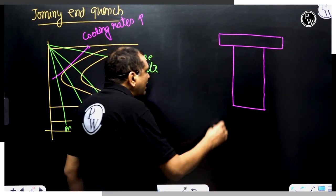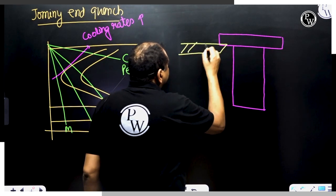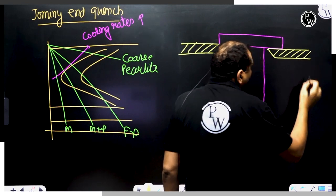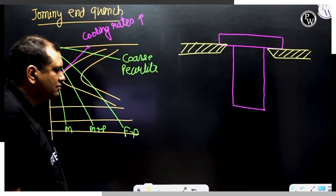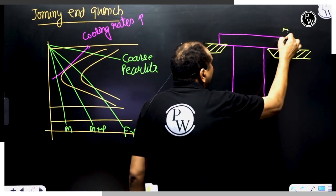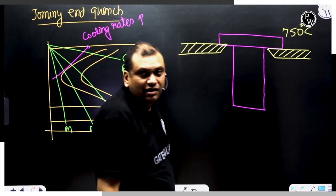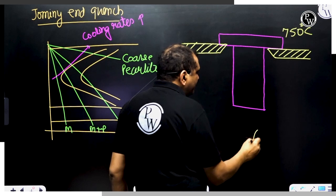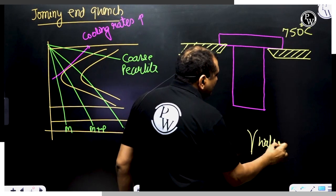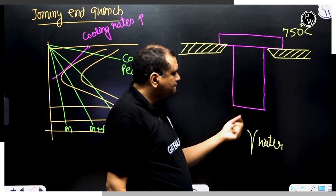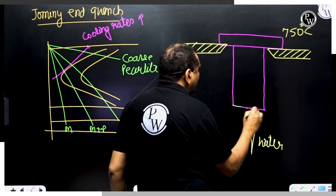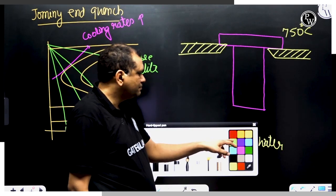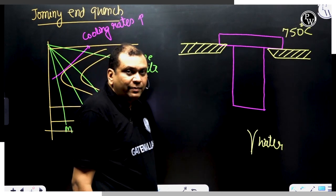Now, this sample is kept over a hinge like this. The temperature of the sample is 750 degrees centigrade. From the bottom of the sample, we are throwing cold water on the surface.